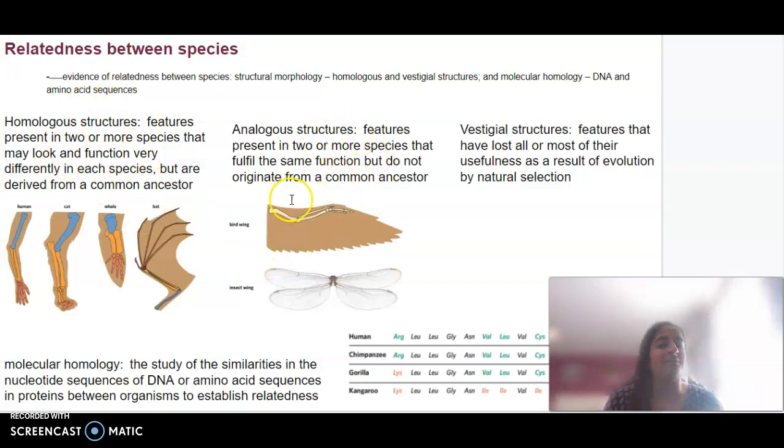For example, a bird wing and an insect wing both allow flight, but they do not share or originate from a common ancestor.